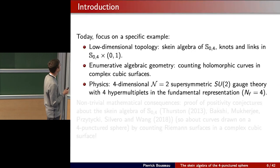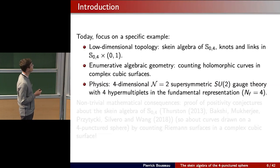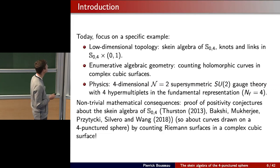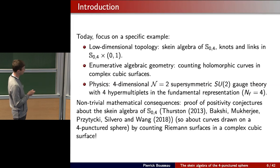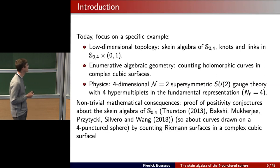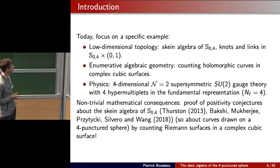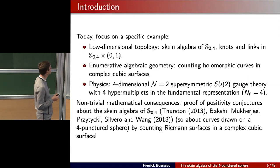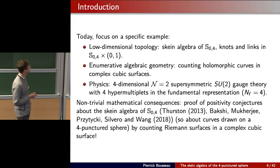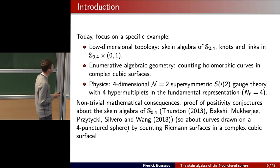In the first part of the talk I will discuss the low-dimensional topology story, then the second half will be about the enumerative algebraic part. The main point would be the connection between the two topics. This connection has non-trivial mathematical consequences: once you know it, you can prove some positivity conjectures about the skein algebra, and results about knots and links in the four-punctured sphere cross the interval.